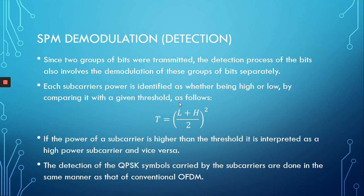So, we understood how transmission and modulation are done — but what about the detection? Since we modulated two groups of bits separately, we also have to demodulate them separately. Since we know the values of the high and low power levels, we can simply follow thresholding, which is relatively simple and not complex at all. Since we know the two power levels, all we need to do is draw a midpoint between them and use it as a threshold.